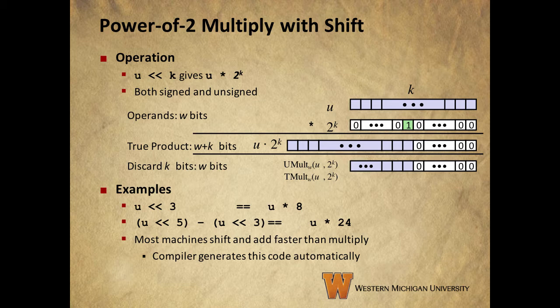So, if we left shift u by 3 bits, we end up with u times 8. We can multiply by non-powers of 2 by combining shifts and adds or subtractions. We can get u times 24 by shifting u by 5, giving us 32u, then subtracting u left shifted by 3 or 8u.